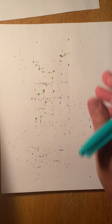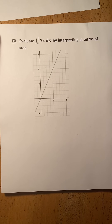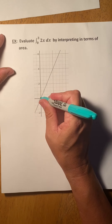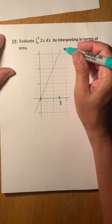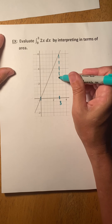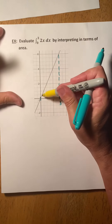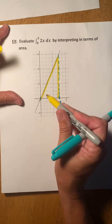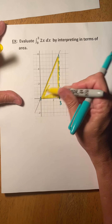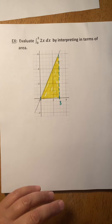Let's do one. Suppose we are asked to evaluate the integral from 0 to 3 of 2x by interpreting it in terms of area. So 0 to 3 would be from here to here — 3 is right here. We're looking for this area right here. You can clearly see that this is just a triangle, so we can use geometry in these nice simple cases to find this area.